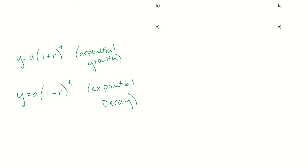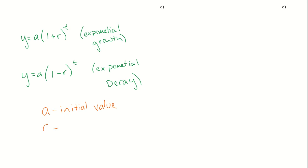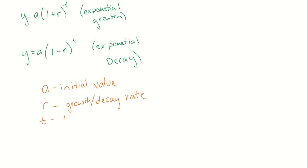Let's talk about what each of these values mean. So a is going to be our initial value. Next we have r, which is going to be our growth or decay rate — growth or decay, depending on if we're adding or subtracting. And then t is for time, which is in years, and our rate is in decimals. So make sure with the rate — because you are given the rate as a percentage — you put it in decimal form by moving the decimal to the left two places.